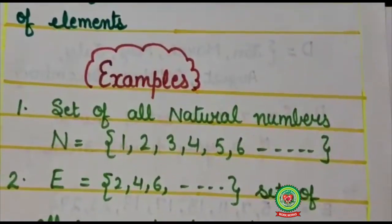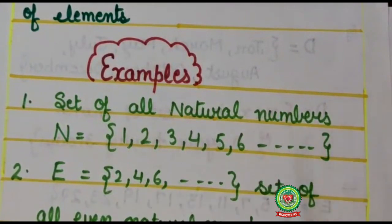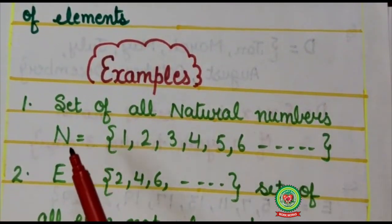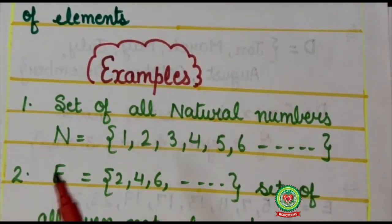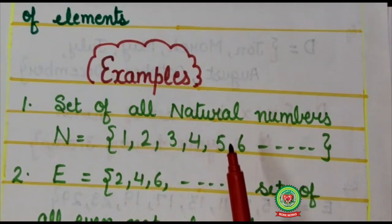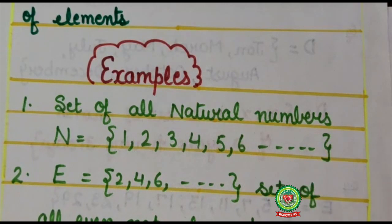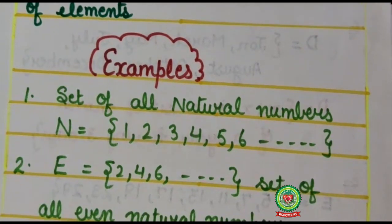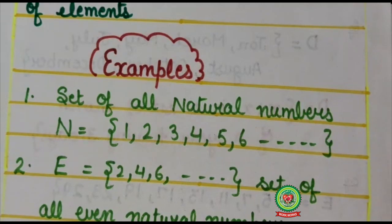Here I am having set of natural numbers. All natural numbers. Now capital N stands for natural numbers. Here natural number starts from 1, 2, 3, 4, 5, 6, so on. These dots indicates that listing is endless. That means we go on adding 1 to any natural number to get the next one. And this process will never come to an end. Therefore, N is an infinite set.